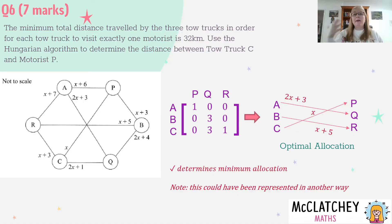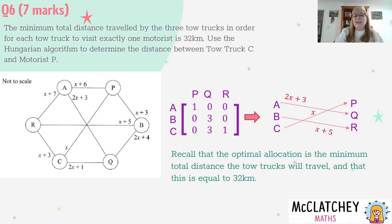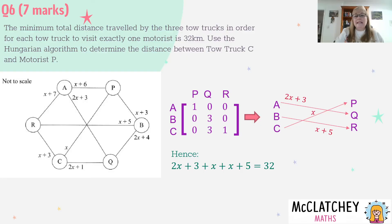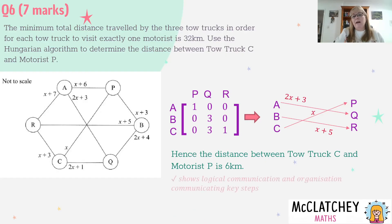Finding that minimal allocation and expressing that in some way was worth our fifth mark. We're now going to have to set that in an algebraic equation to 32. We're going to collect those like terms. 2X plus X plus X gives me 4X, 3 plus 5 is 8, so we've got 4X plus 8 equals 32. Subtract 8 from both sides, we'll end up with 4X equals 24. Divide both sides by 4, X is going to be equal to 6. And that was our sixth mark, determining X's value.